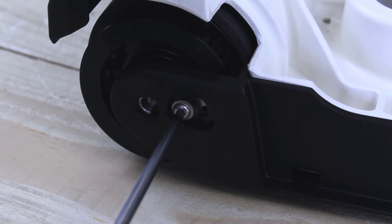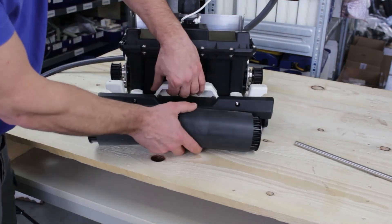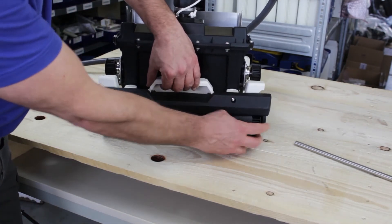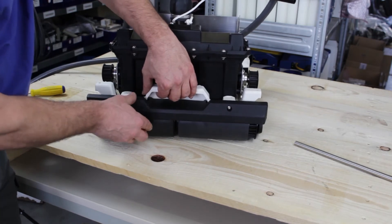After the axle has been correctly reinserted, we hand tighten the locking screw. Then we install the rollers on the other side of the device in the same way.